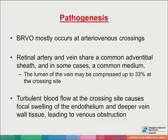BRVO mostly occurs at arteriovenous crossings. The retinal artery and vein share a common adventitial sheath, and in some cases, a common lumen. The lumen of the vein may be compressed up to 33% at the crossing site. Turbulent blood flow at the crossing site causes focal swelling of the endothelium and deeper vein wall tissue, leading to venous obstruction. Venous obstruction leads to elevation of venous pressure that may overload the collateral drainage capacity and lead to macular edema and ischemia.